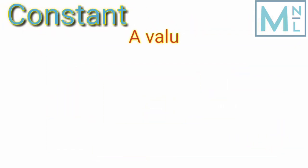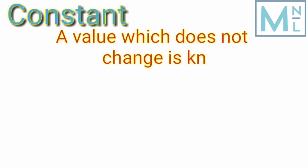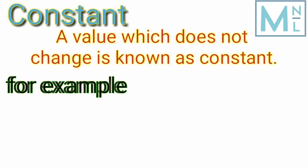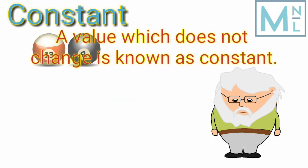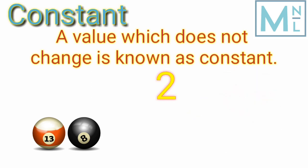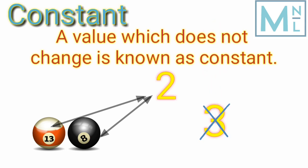Let's talk about constant. A value which does not change is known as a constant. For example, the number 2 — two is always two; it is constant because it can never change.